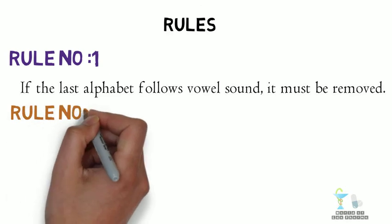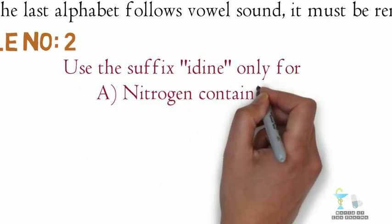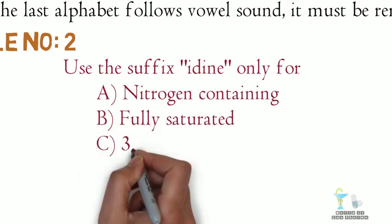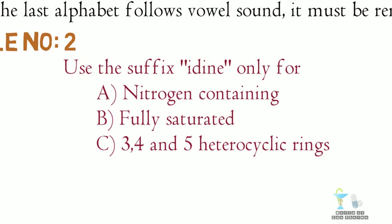Rule number 2: Use the suffix idine only for nitrogen-containing, fully saturated, 3-, 4-, and 5-membered heterocyclic rings.